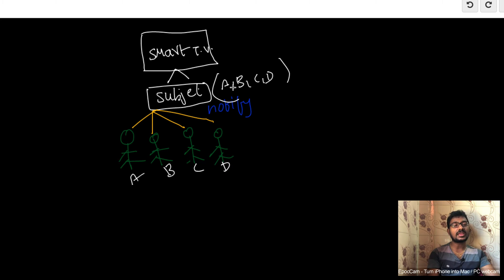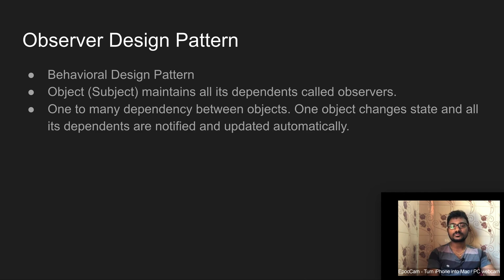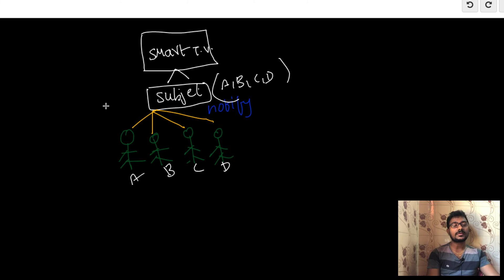The subject holds observer A ID, observer B ID, observer C ID, and observer D ID. It won't hold observer A's personal information like name and other details — just the ID for communication. And then, there is a one-to-many dependency between objects. If the subject changes state from unavailability to availability, then all the registered observers will be notified automatically.